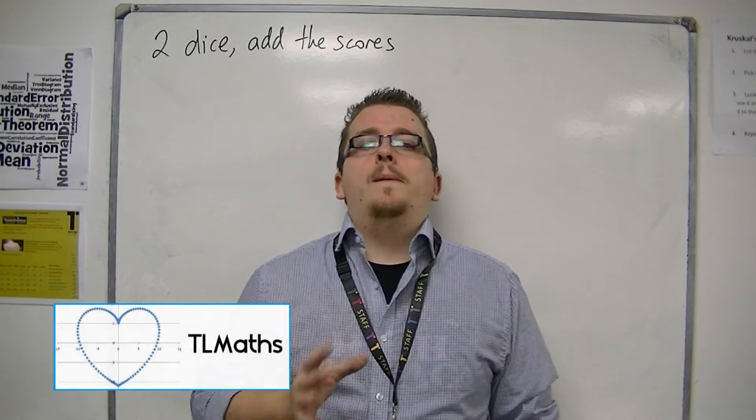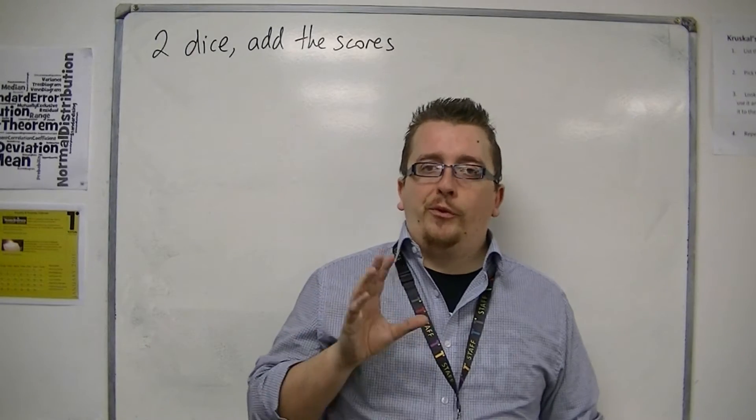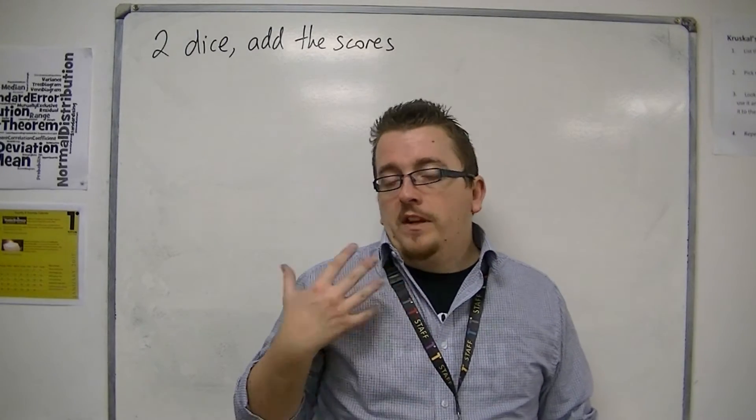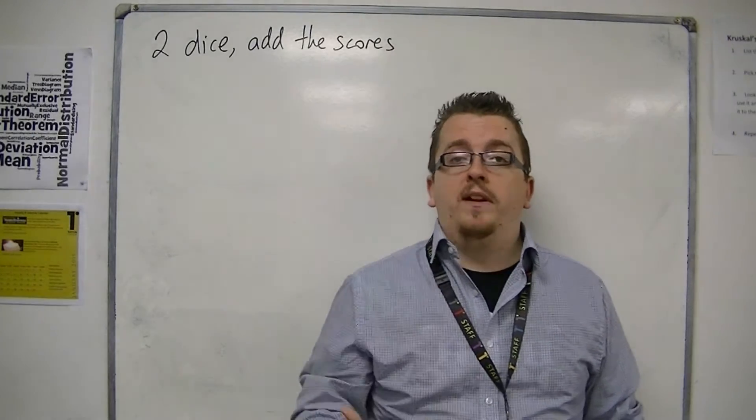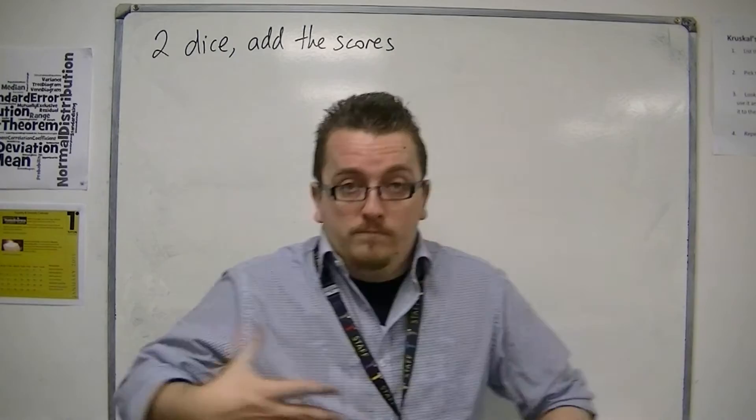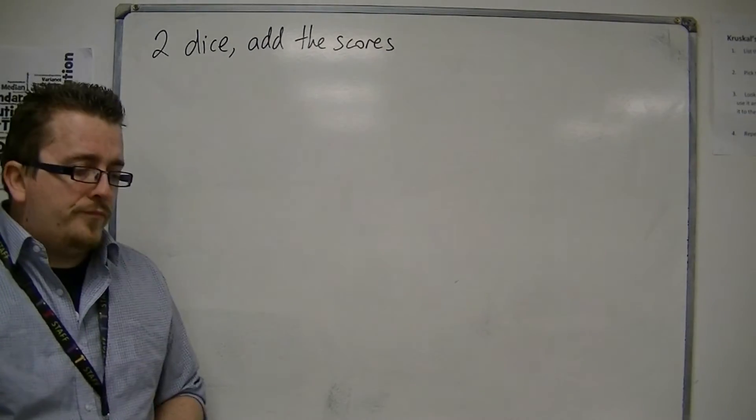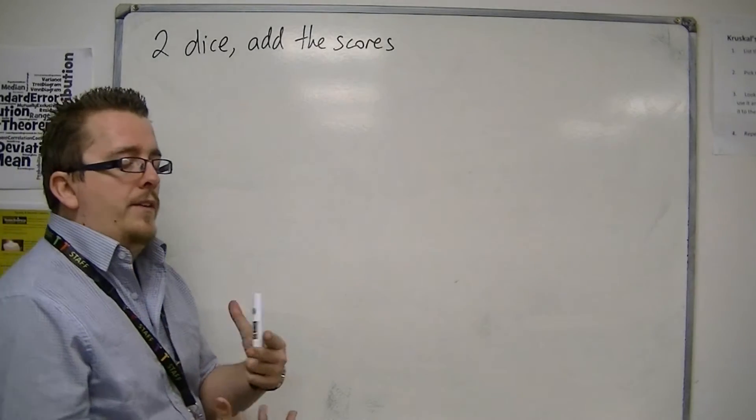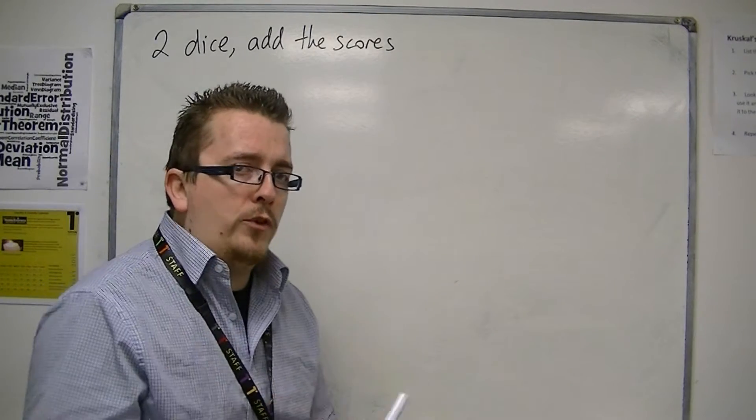Let's say we're playing a game which involves rolling two dice and adding the scores together. A good example of that is when you play a game like Monopoly—you usually play with two dice and you combine the scores. Let's say we want to look at the probability of getting certain scores on these dice.